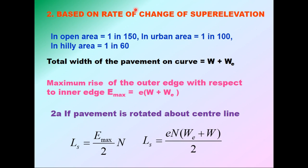The rate of change of super elevation is 1 in 150 in open areas, 1 in 100 in urban areas, and 1 in 60 in hilly areas. The total width of the pavement on a horizontal curve is the width of the carriageway plus extra widening. If e is the super elevation, then the maximum rise of the outer edge with respect to the inner edge is e_max = e × (W + W_e).